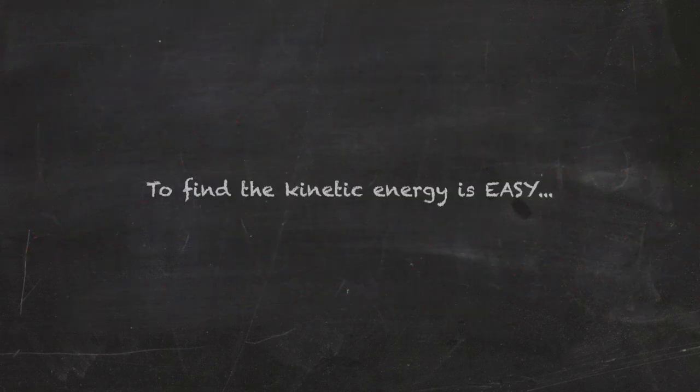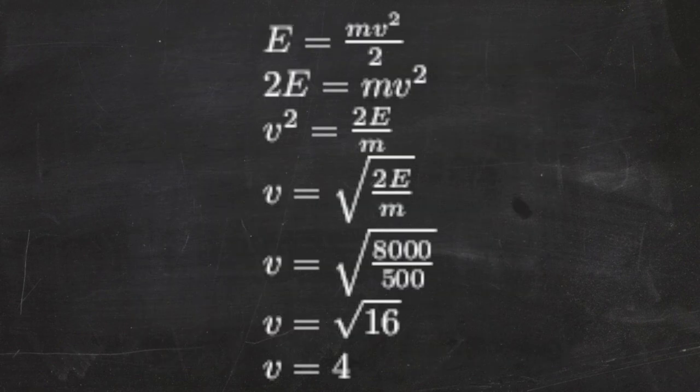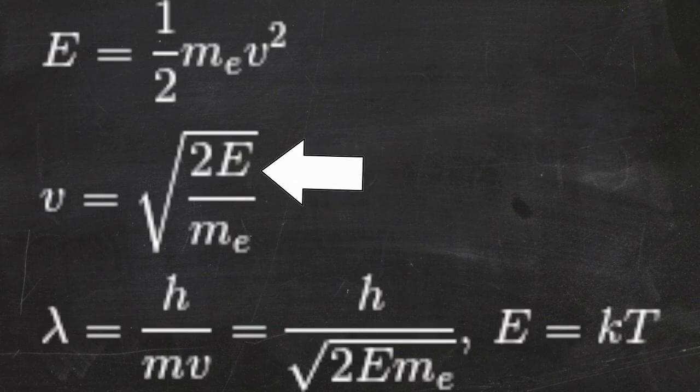To find the kinetic energy is easy. All we really need is the mass of Turbo and his speed. But we don't know his speed, so we must rearrange a bit and solve for velocity. We know the energy, and all we need is mass. Simple.